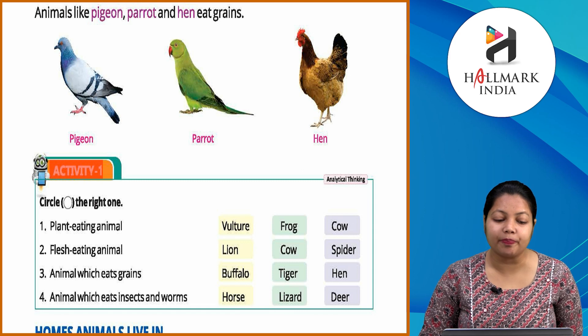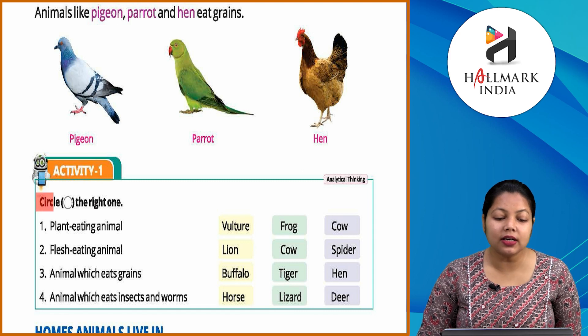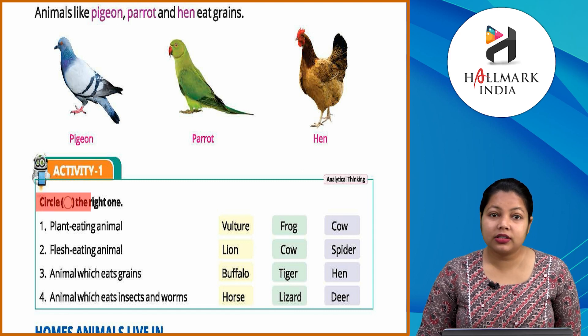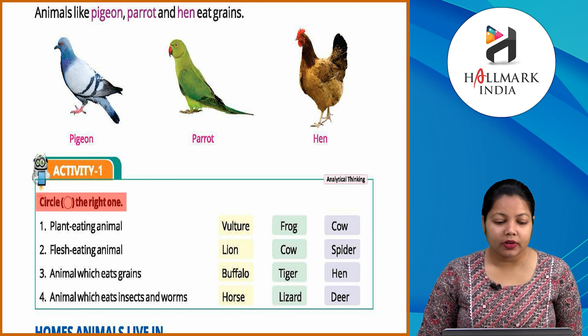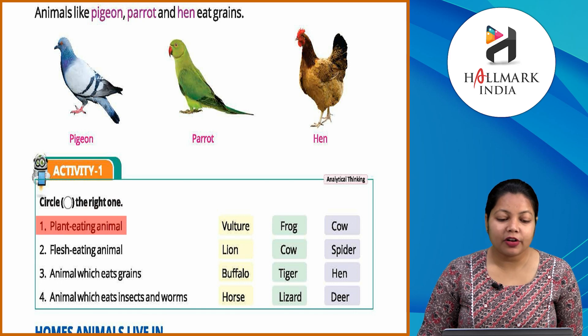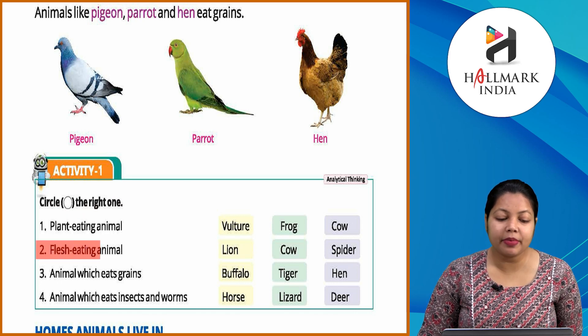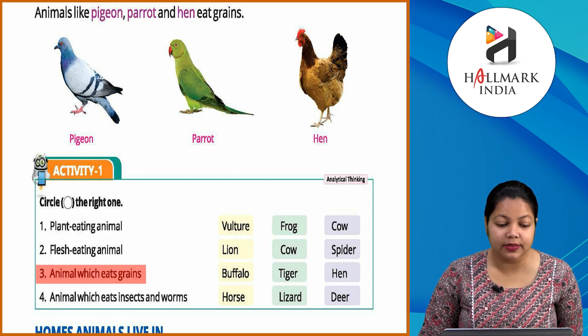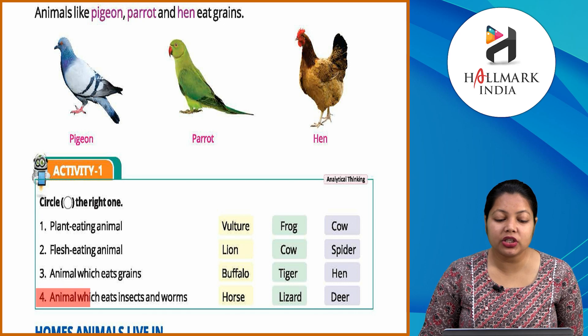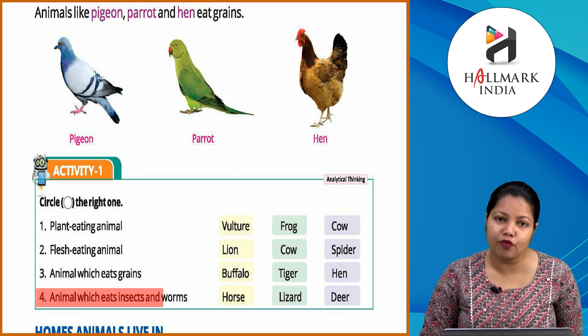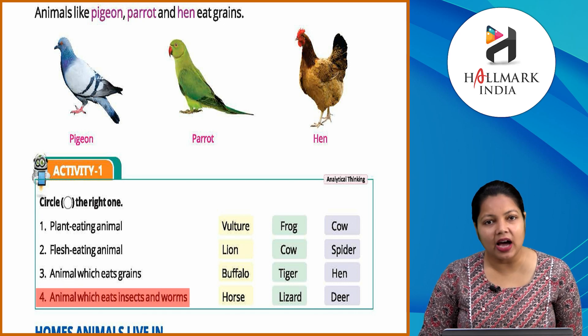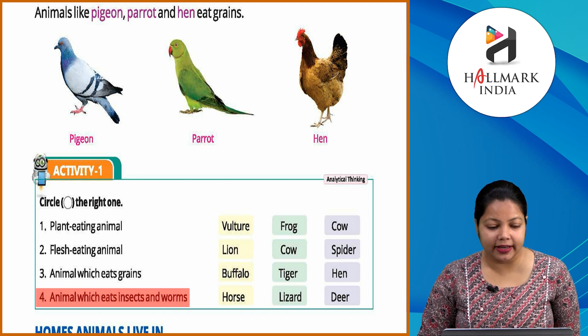Activity one: circle the right one. Plant eating animal, flesh eating animal, animal which eats grains, animal which eats insects and worms. Ye aap khud se karenge.